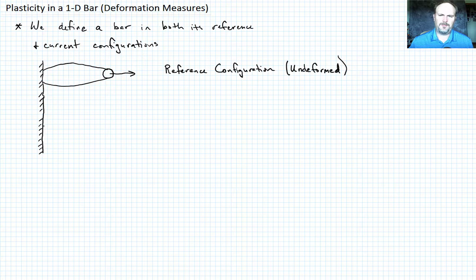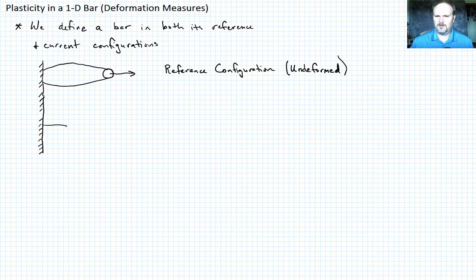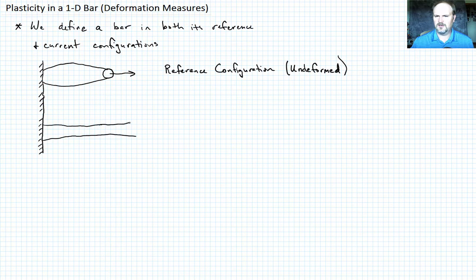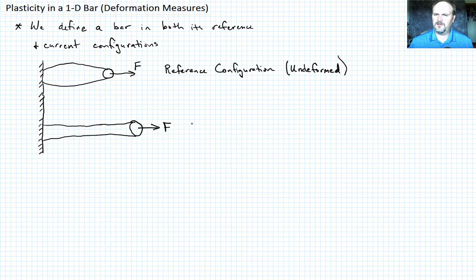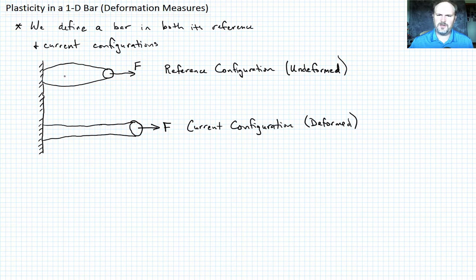Now what we want to ask is: what happens when the load is applied? At the boundary wall, nothing is going to change. But maybe the stretch of the bar looks something like this when deformed — with our load applied. We're going to call this the current configuration, sometimes called the deformed state. Now let's define a few features in here.